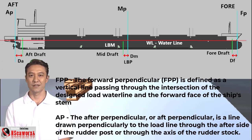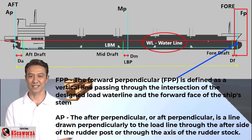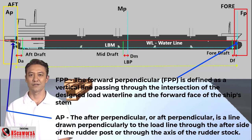Terms and definitions. FPP — the forward perpendicular is defined as a vertical line passing through the intersection of the design load waterline and the forward face of the ship's stem. AP — the after perpendicular, or aft perpendicular, noted AP, is a line drawn perpendicularly to the load line through the after side of the rudder post or through the axis of the rudder stock.